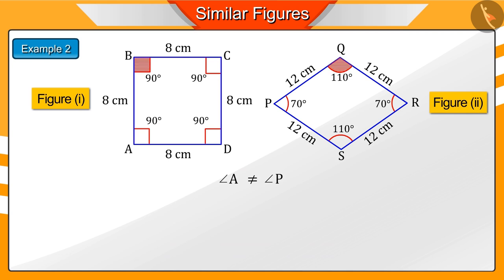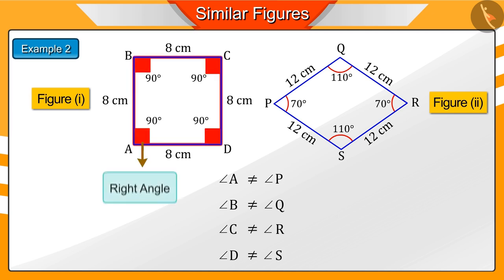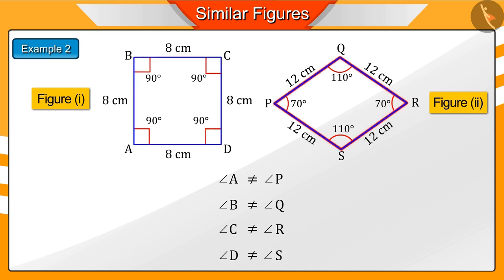Now, we see their corresponding angles. All the angles of figure 1 are right angles. But all the angles of figure 2 are not right angles. So, the second condition of similarity is not fulfilled. Therefore, figure 1 and figure 2 are not similar.